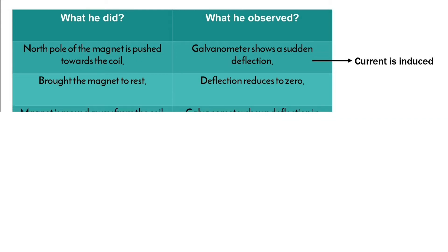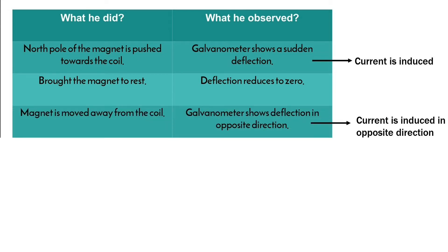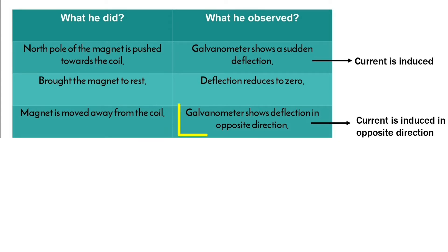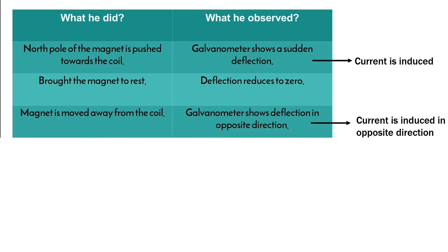At the third time, when he moved the magnet away from the coil, the galvanometer showed deflection in the opposite direction, indicating a reversal in the direction of induced current — that is, the current is induced in the opposite direction.